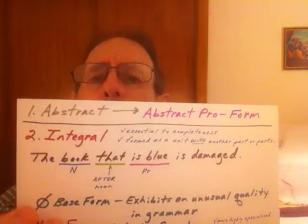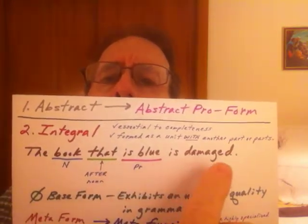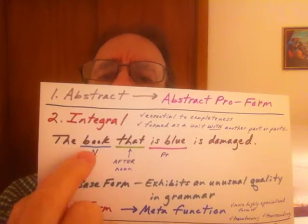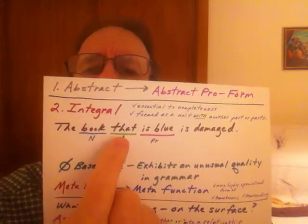So we look at our sample sentence: "The book that is blue is damaged." We see here we have our head noun, the word "that" comes after our head noun, and we have a partial predicate, or you could even say a phrase — it's incomplete. Now we see right away that the word "that" is not in its base form. Ordinarily, in base form, the word "that" will come in front of or before the other significant word in the relationship. So it's not in its base form — it exhibits an unusual quality in grammar, something you don't see very often, if at all.